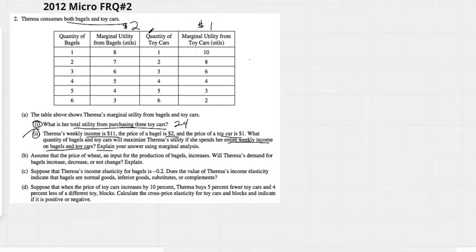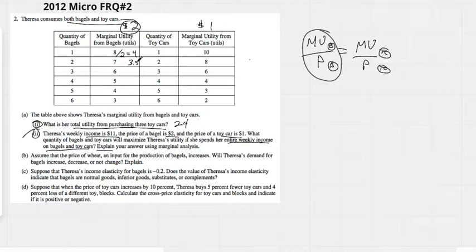So understand here, we have to use the formula marginal utility over price. Our marginal utility, we want these two to equal one another. This could be bagels here and toy cars here. So this is our formula. We need to come in here and we take the $2 price and we're going to divide the marginal utility by the $2. This is going to give us an actual marginal utility over price of bagels of 4. Obviously, 3.5, 3, 2.5, 2, and 1.5.